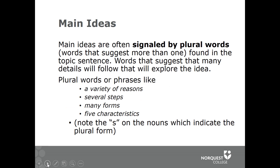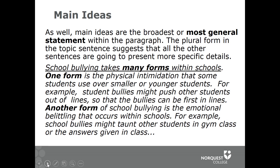Plural words or phrases like 'a variety of reasons,' 'several steps,' 'many forms,' 'five characteristics' — note the S on the nouns which indicate the plural form — signal that the main idea is broad. Main ideas are the broadest or most general statement within the paragraph. The plural form in the topic sentence suggests that all the other sentences are going to present more specific details.